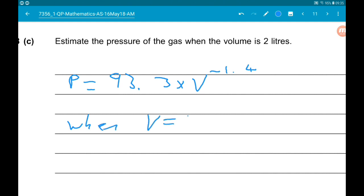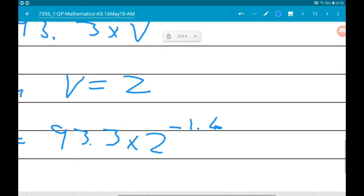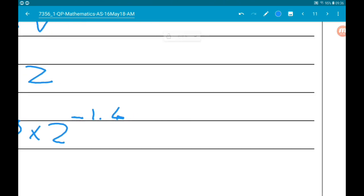When V is 2, P is 93.3 times 2 to the minus 1.4, which gives us 35.4 kilopascals.